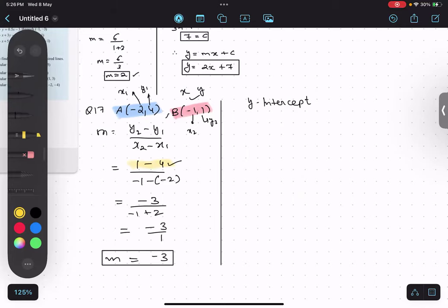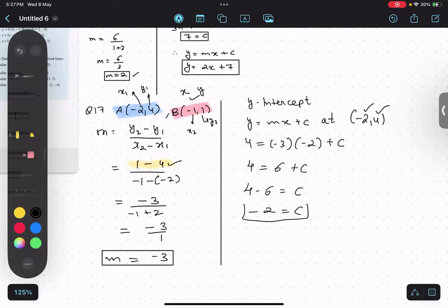Okay, now for y-intercept: y equals mx plus c. At any one point, I told you, so we'll take the first point: (-2, 4). So y value here is 4. M value is minus 3, and x value is minus 2 plus c. So 4 equals minus minus plus 6. 4 minus 6 equals c, minus 2 equals c. So this gives me the y-intercept. So my equation becomes y equals minus 3x minus 2. This is my final equation.